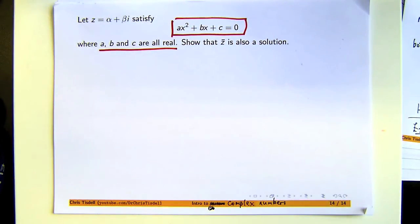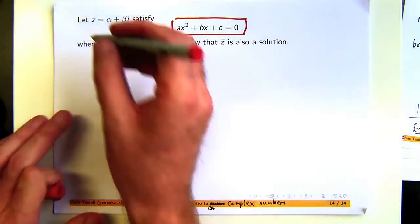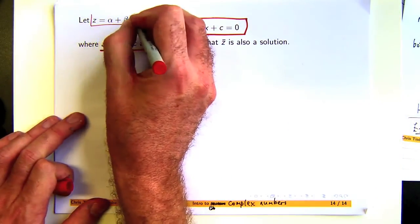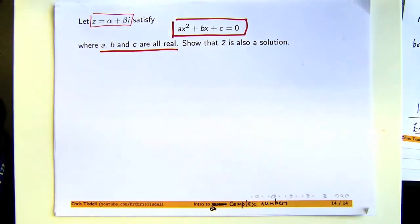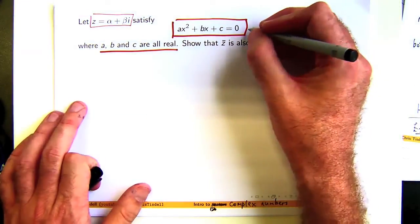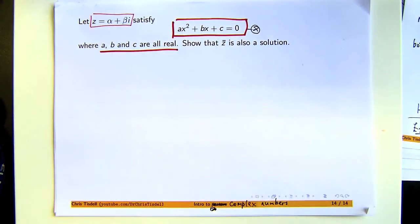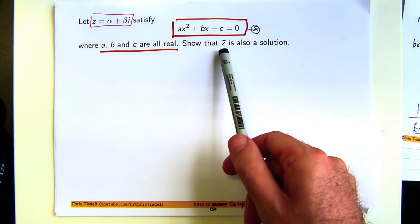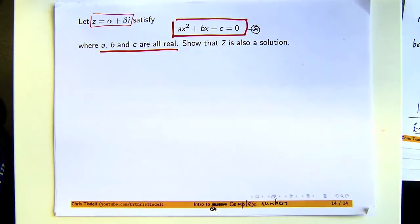And we're told that z satisfies the quadratic equation. What we're asked to do is show that the conjugate of z, z bar, is also a solution to star.